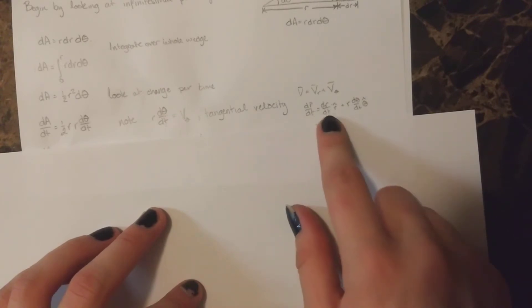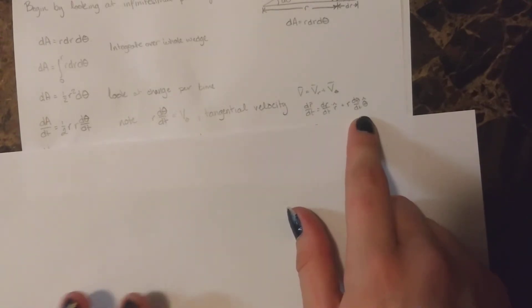This is shown here, where the velocity, or the derivative of the position vector, is equal to a radial portion plus a theta portion tangential.